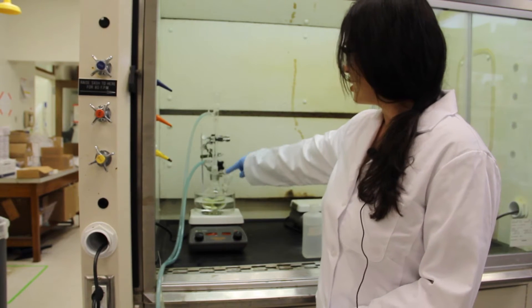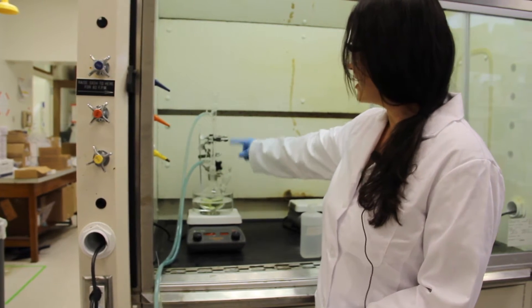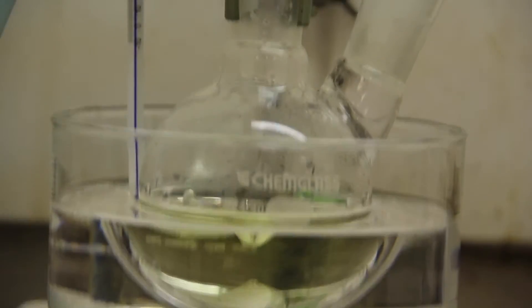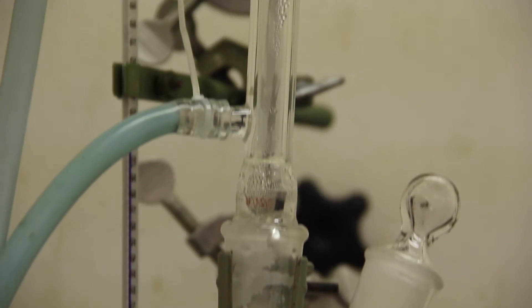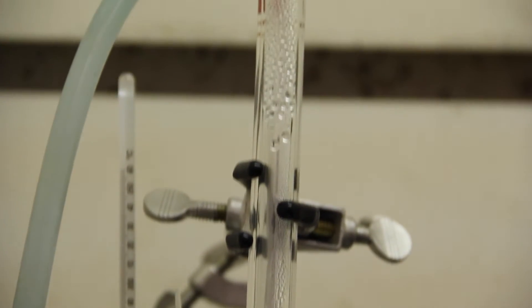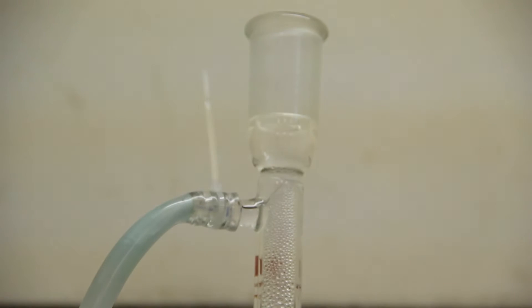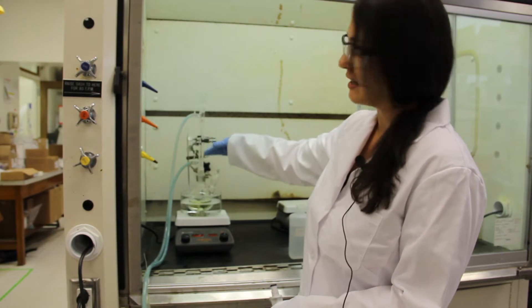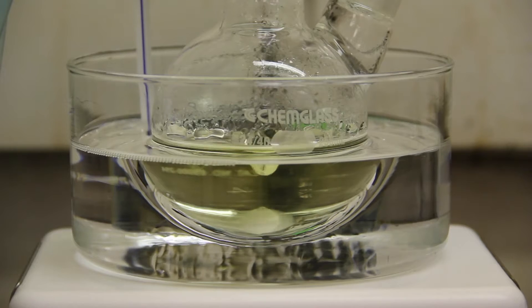Attached to the round bottom flask we have a condenser, and through this condenser we are flowing cold water so that when the water which is being heated evaporates into the condenser it reaches a cooler temperature and then is condensed back into the solution.